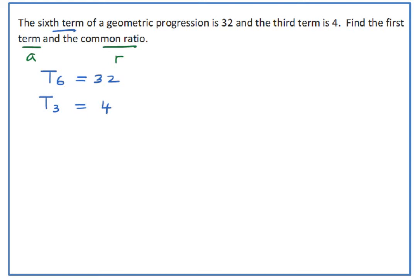Quickly go to the formula for the nth term of a geometric progression. Tn equals A times r to the power of n minus 1. Don't confuse this with the arithmetic progression formula. Remember, this is for geometric progression, and that is for arithmetic progression.